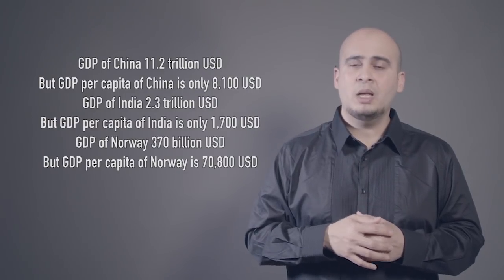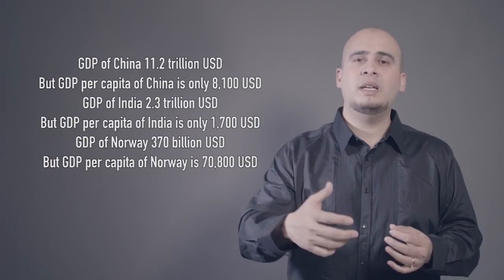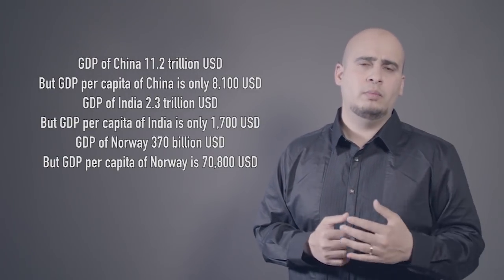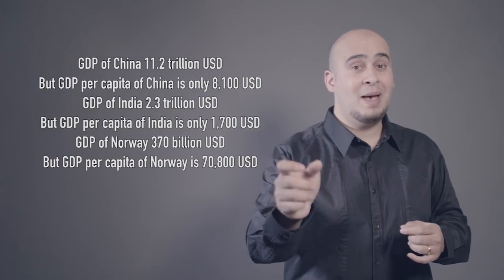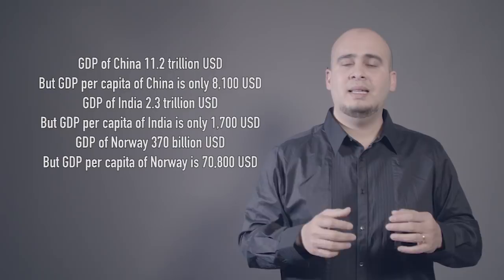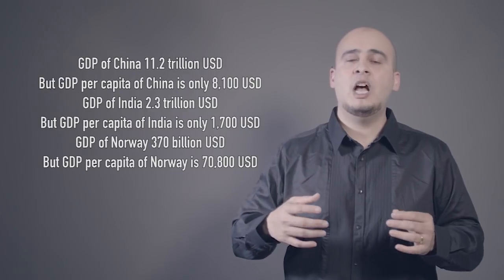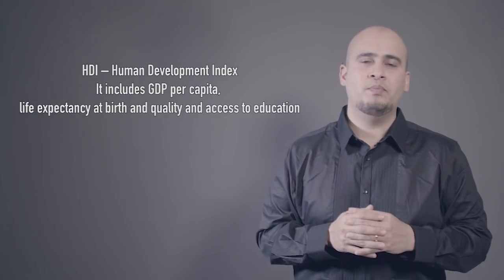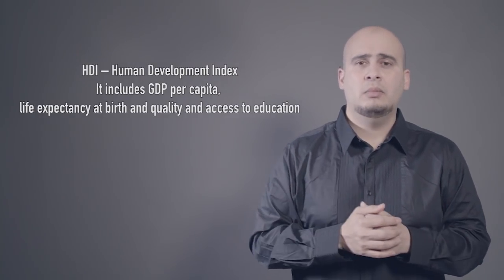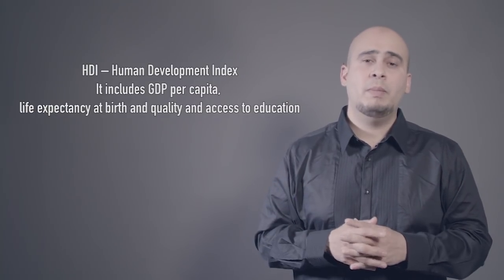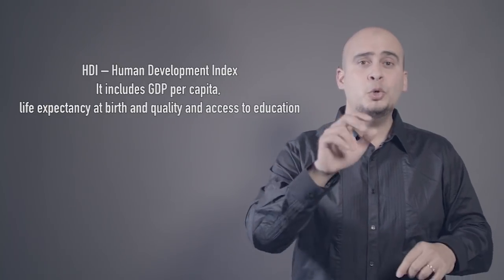Now, do you reckon GDP is sufficient to talk about the standard of living in a country? Not really. To get a better understanding we need more than GDP. How about GDP per capita — GDP per person? It accounts for the population, making it easier to understand how much each person is contributing or receiving. But that's not enough either. How about HDI — the Human Development Index? It takes into account GDP per capita plus two new factors.